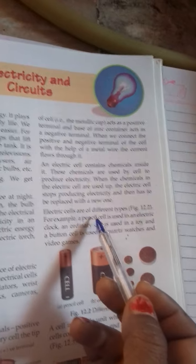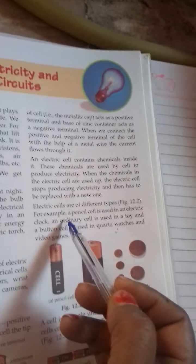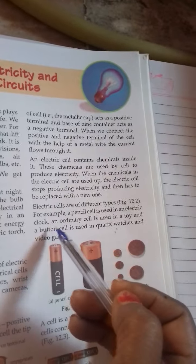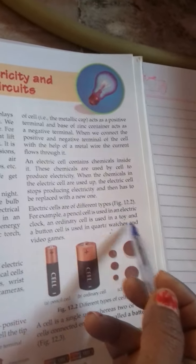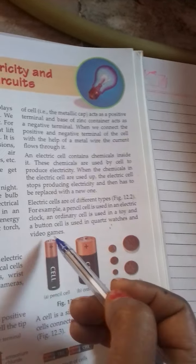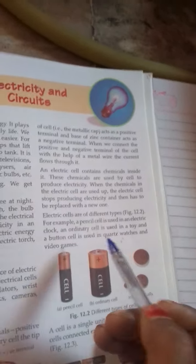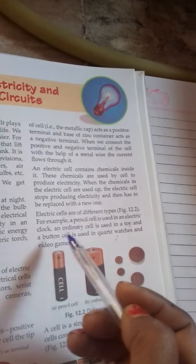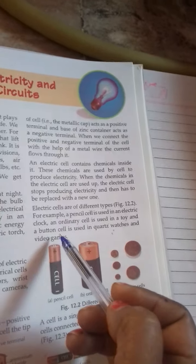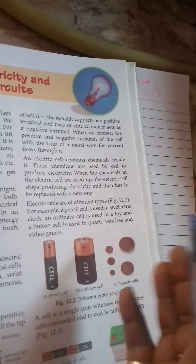Electric cells are of different types. For example, a pencil cell is used in an electric clock. An ordinary cell is used in a toy and a button cell is used in watches and video games. Pencil cells are used in electric clocks, ordinary cells are used in toys, and button cells in watches.